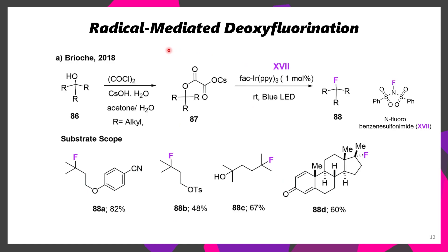In terms of doing deoxyfluorination without the use of deoxyfluorinating agents, it's possible to go through a radical-type mechanism. What these authors do is take this tertiary alcohol and convert it to the corresponding cesium oxalate salt. This cesium oxalate salt is then able to undergo photoredox conditions to generate a carbon-centered radical, which can then intercept a fluorine from NFSI — fluorodibenzene sulfonamide. So if you're having trouble with deoxyfluorination, for instance if you're getting elimination side reactions, you might want to look at this as a possible way to introduce fluorine instead.